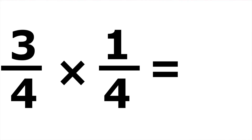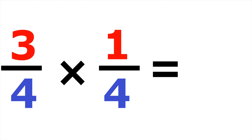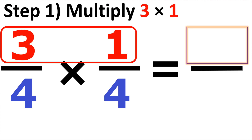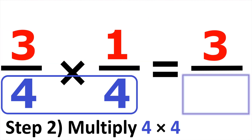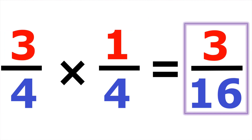Moving on to our third example, we have three-fourths times one-fourth. We indicate the numerators in red and the denominators in blue, and we multiply straight across starting with the numerators. Three times one gives us three. Looking at the denominators, we have four times four, which gives us sixteen. So the answer is three over sixteen.